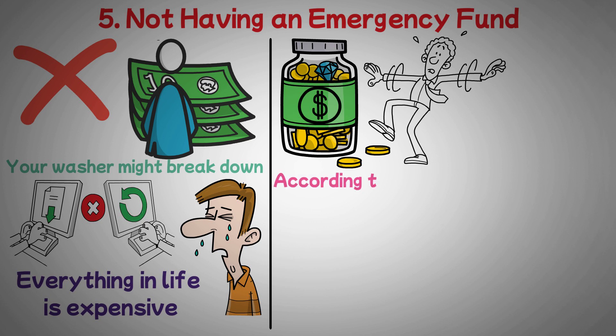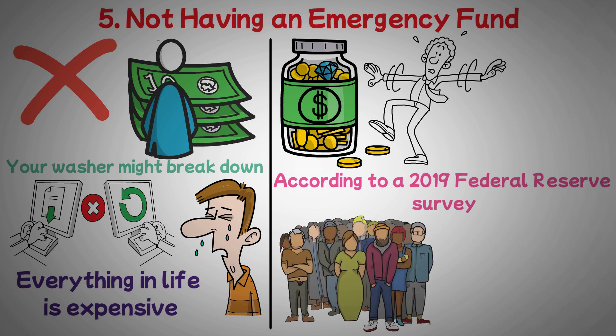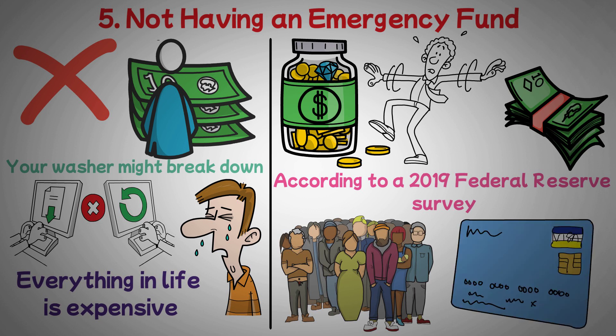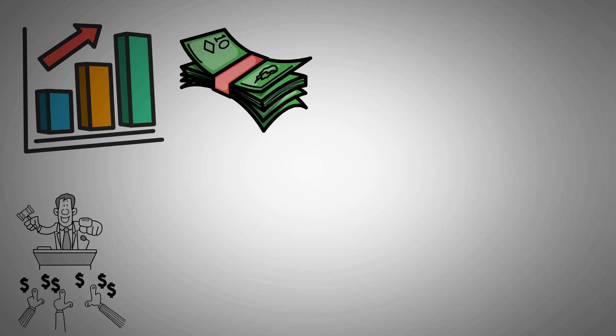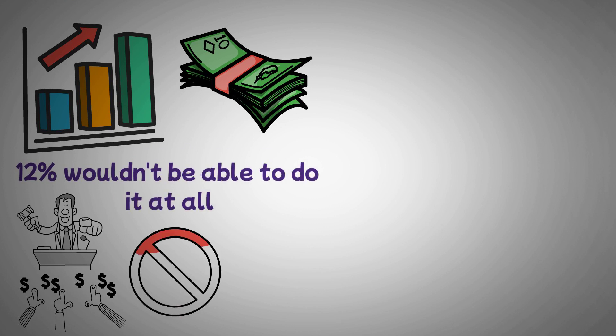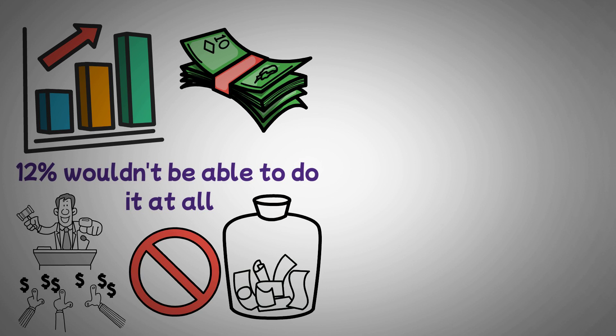Unfortunately, according to a 2019 Federal Reserve survey, roughly 40% of American adults wouldn't be able to handle a $400 emergency with cash, savings, or a credit card charge that they could rapidly pay off. In order to raise the $400, almost 27% of those polled would have to borrow money or sell something, and 12% wouldn't be able to do it at all. Fortunately, you can avoid being one of these folks. This money can be easily saved.